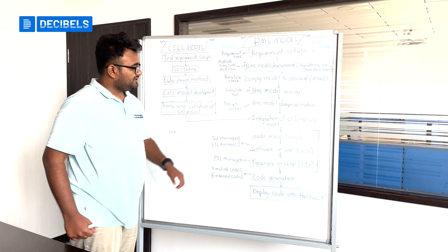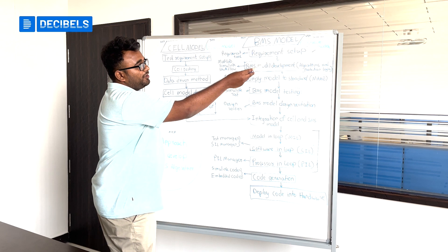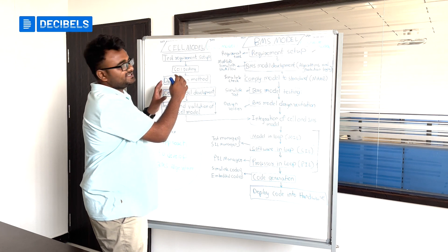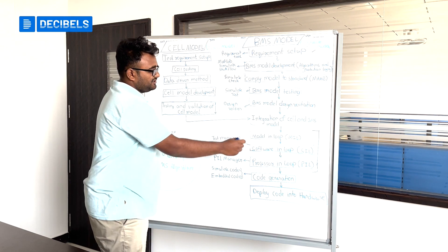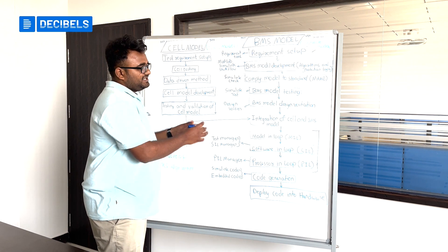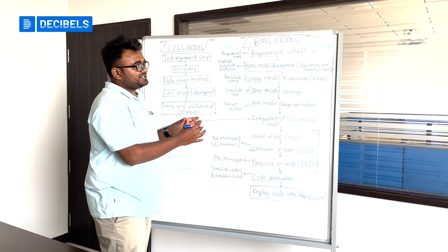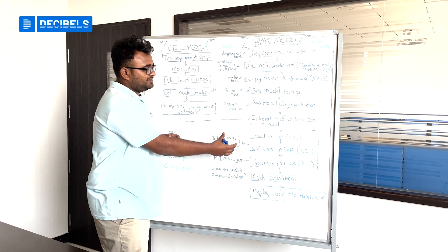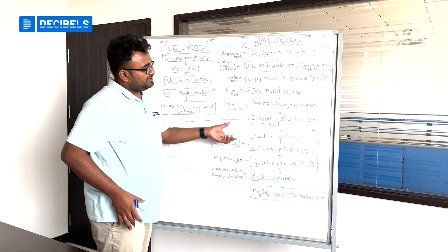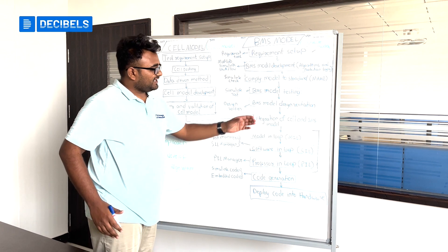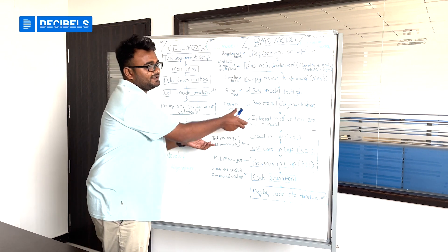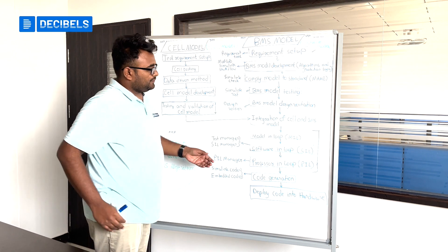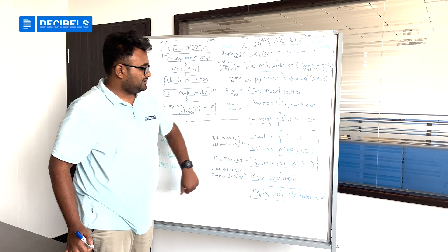The purpose of the Model-in-Loop simulation is to verify that the controller model — which is the BMS model — is really controlling the cell correctly. Instead of using the algorithm on real hardware immediately, we first simulate at the system level environment. Once we validate that it is safe and all the logics and algorithms are working perfectly, we can move forward with confidence to Software-in-Loop testing.